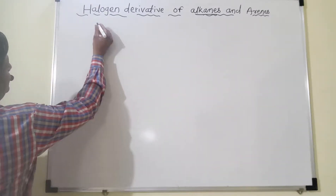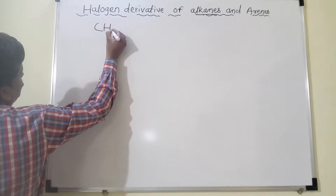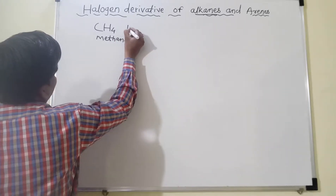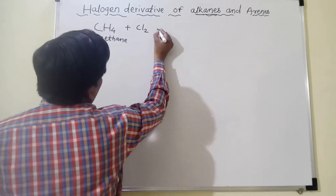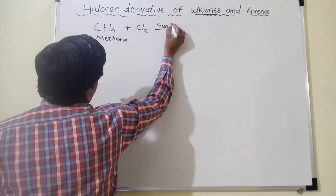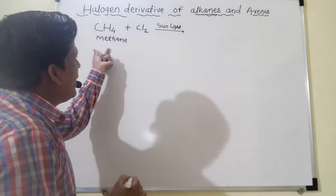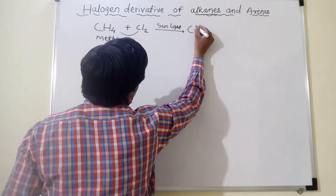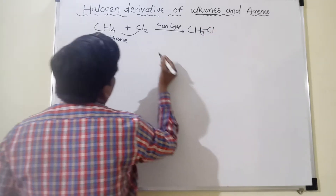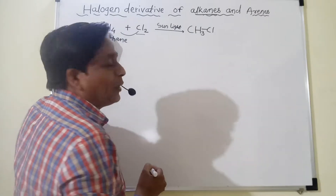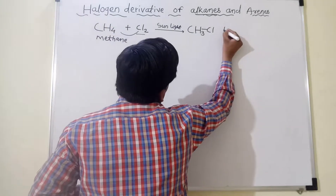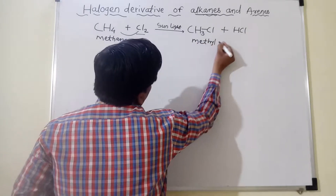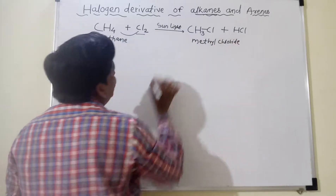Just see one example here. You know the alkane CH4, that is methane. If this methane reacts with Cl2 — that is chlorine — in presence of sunlight, methane has four hydrogen atoms. So from this methane, one hydrogen atom is replaced by the chlorine. Here we get CH3Cl. One Cl attaches to CH4 and one hydrogen is removed, with the formation of HCl (hydrochloric acid). The product is methyl chloride, which is the halogen derivative of alkane.